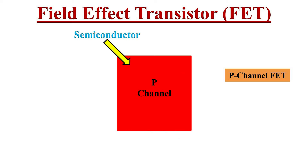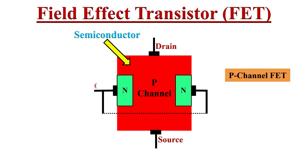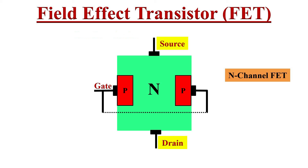P-channel FET is similar in construction, except that it uses a P-type channel and two N-type junctions are diffused on opposite sides. Direct electrical connections for drain and source terminals are made at the two ends of the bar. A gate terminal is brought out by internally connecting these two end regions.